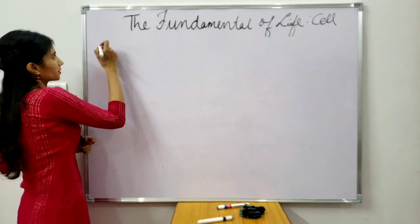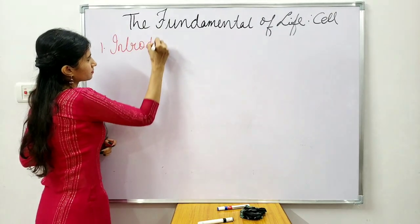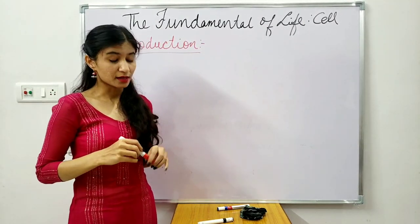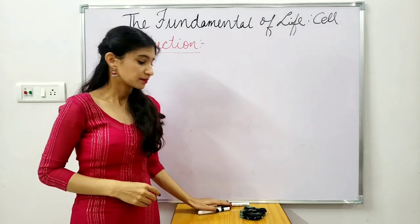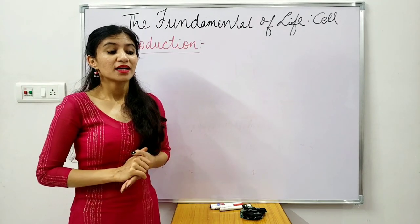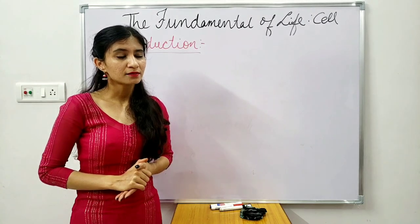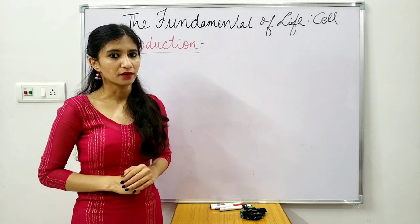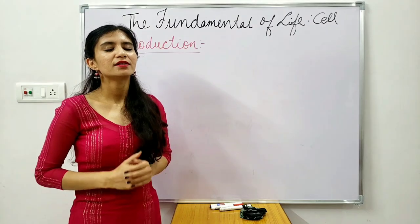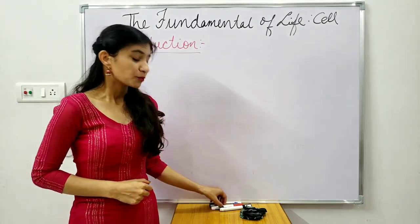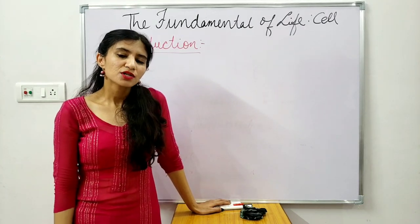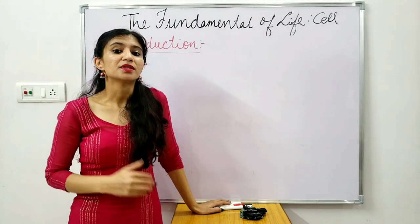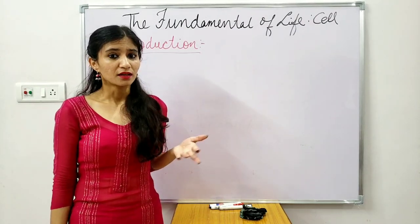The first topic is the introduction of the cell. Before studying this, we need to know: are living organisms the only things made up of cells? The answer is yes — living organisms like animals, plants, and even the smallest microorganisms are made up of cells. So, a cell is basically the basic structural and functional unit of life.